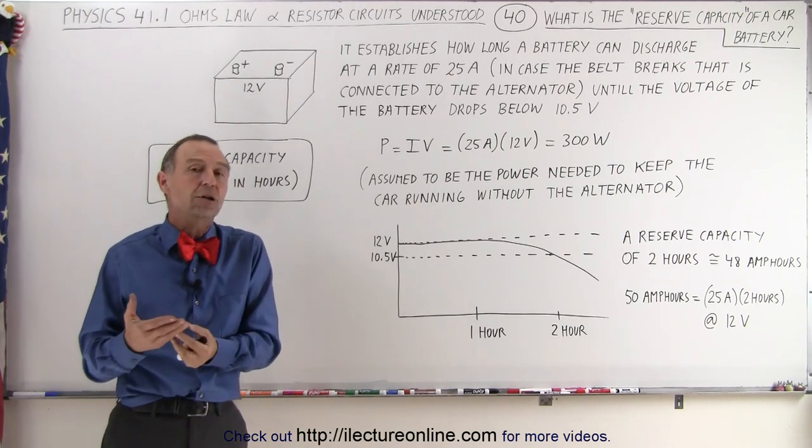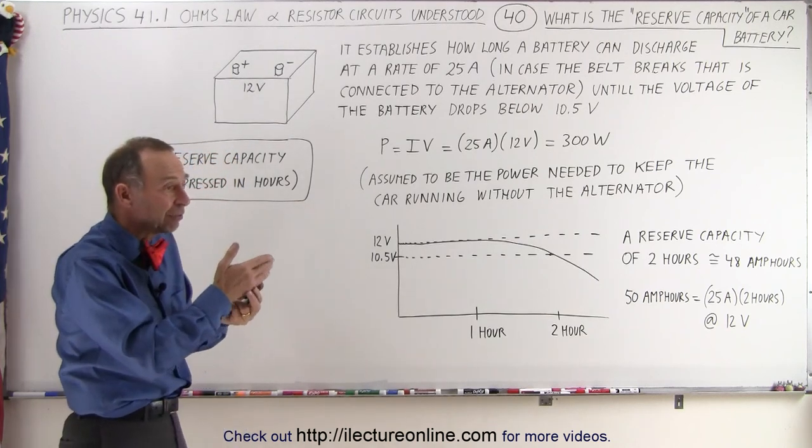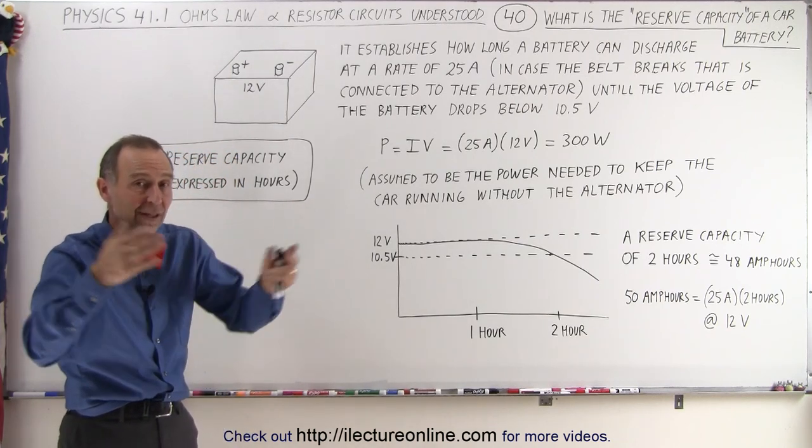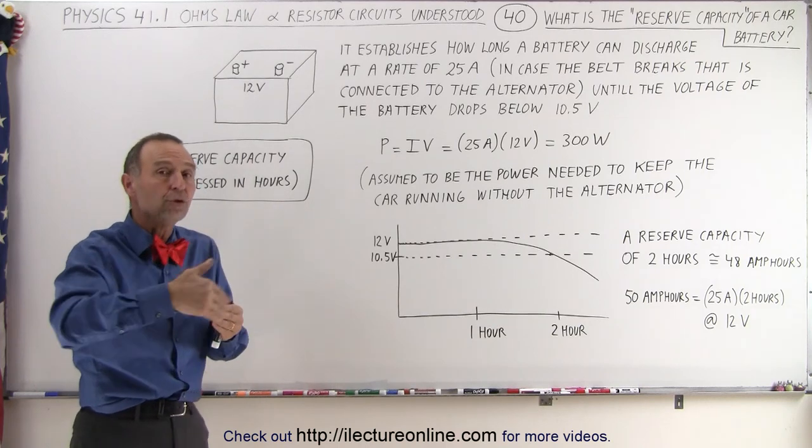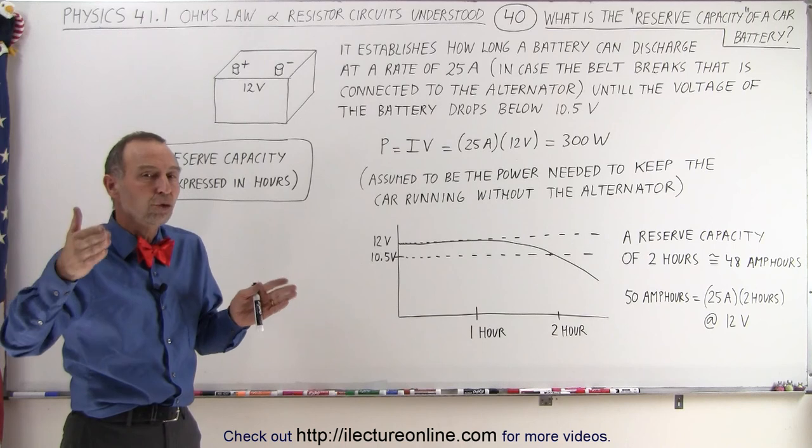So let's assume we have a car that has two hours of reserve capacity, which means that for the next two hours after the belt breaks, and let's assume the battery is fully charged, it can produce a current of 25 amps for the duration of two hours.